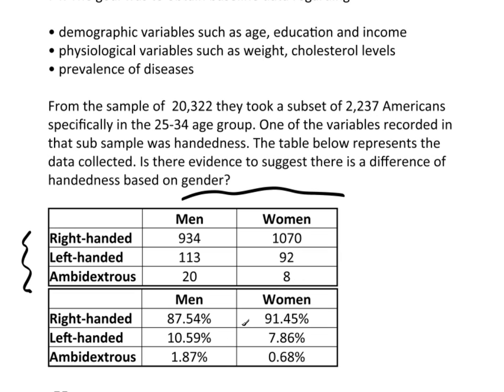These percentages were calculated so you can take a look. You can see that 1.8% of the men were ambidextrous, about 10% were left-handed, and a little over 87% were right-handed. 91% of the women were right-handed, 7% left, and 0.68% were ambidextrous. So looking at these percentages, it looks like there may be a difference in handedness between genders — the gut feeling is that there might be, because there are definitely some differences here. Whether the differences are big enough to detect, that's another story.